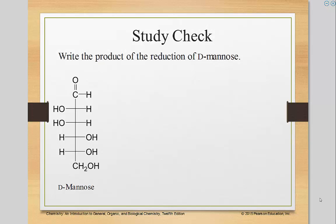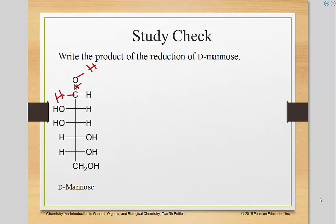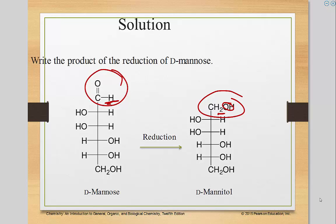So what is the product of the reduction of mannose? Reduction means you're removing bonds to oxygen, so one of these bonds to the oxygen is going to break and form an OH here, with another H coming off. Here it is — this is what it was at the beginning. Now we have an OH group and two hydrogens coming off rather than just one, and that's how you reduce it to make it into a sugar alcohol.